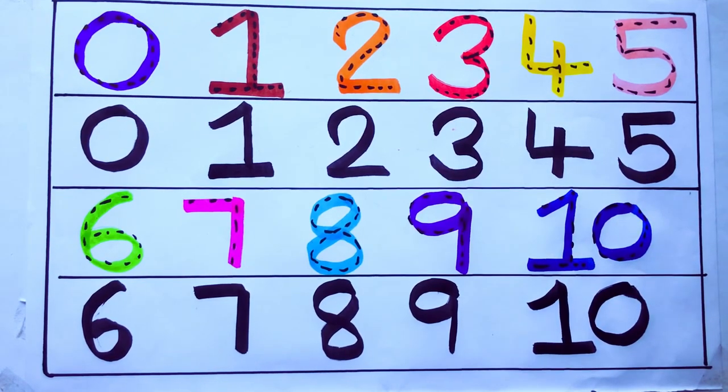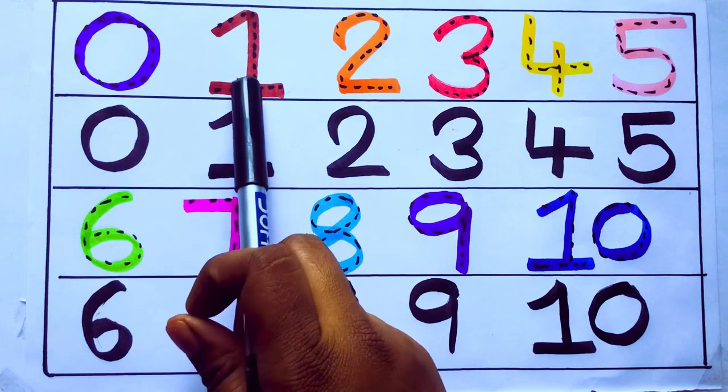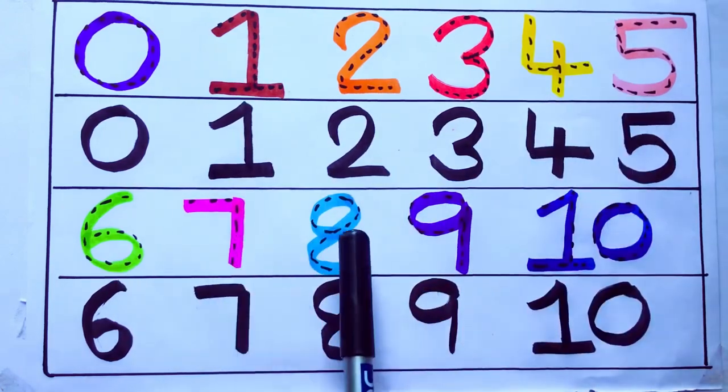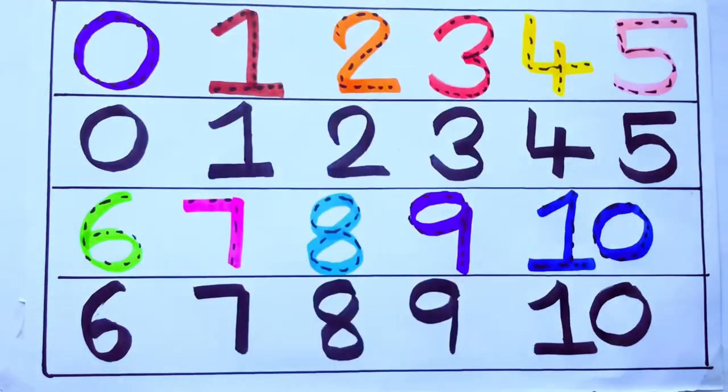Learning numbers: 0, 1, 2, 3, 4, 5, 6, 7, 8, 9, 10. Okay, bye kids.